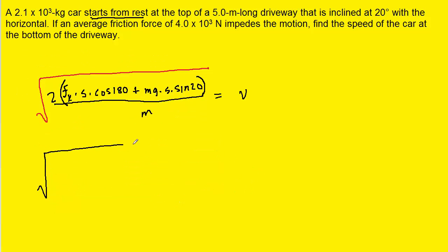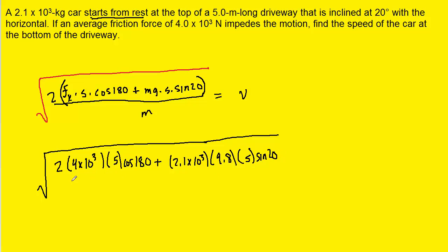And then at this point, we can simply plug in all of the known values. For the kinetic frictional force, we were told that that is equal to 4 times 10 to the 3. And that's in newtons. We'll omit the units just for clarity. s was the length of the ramp, and that was 5. We're going to have the cosine of 180 plus the mass of the car, which is 2.1 times 10 to the 3rd, multiplied by g, which is 9.8. And then s, once again, is 5, the sine of 20. And then we'll divide by the mass of the car. So obviously, you'll want to plug this into your calculator very carefully.